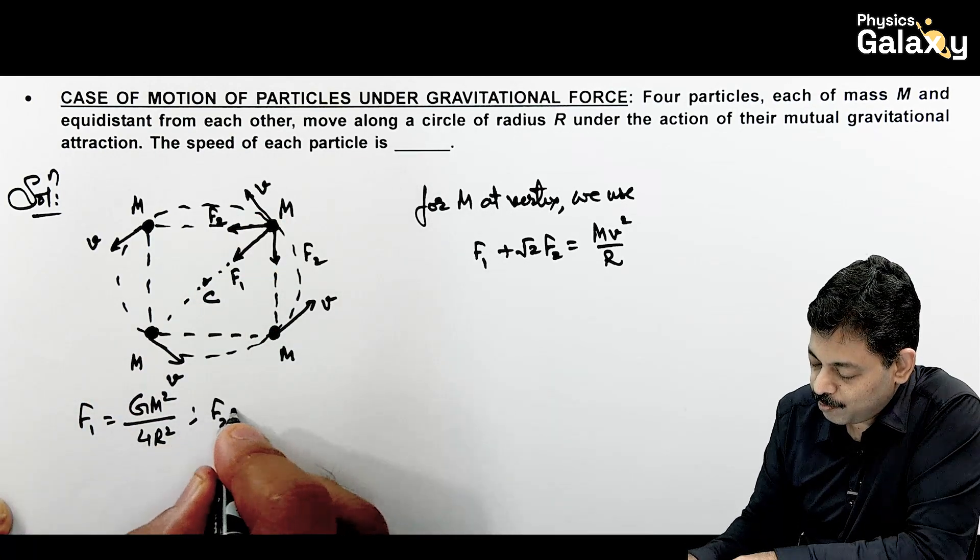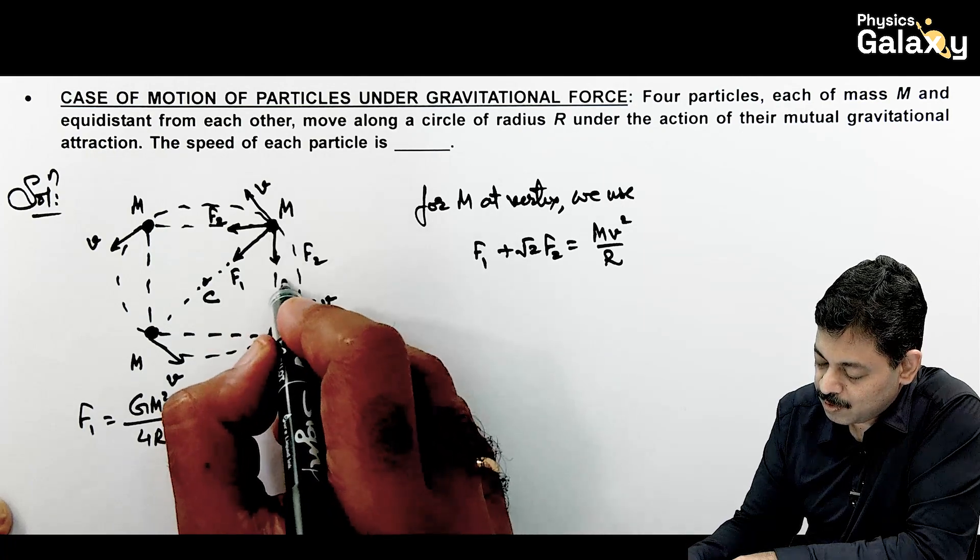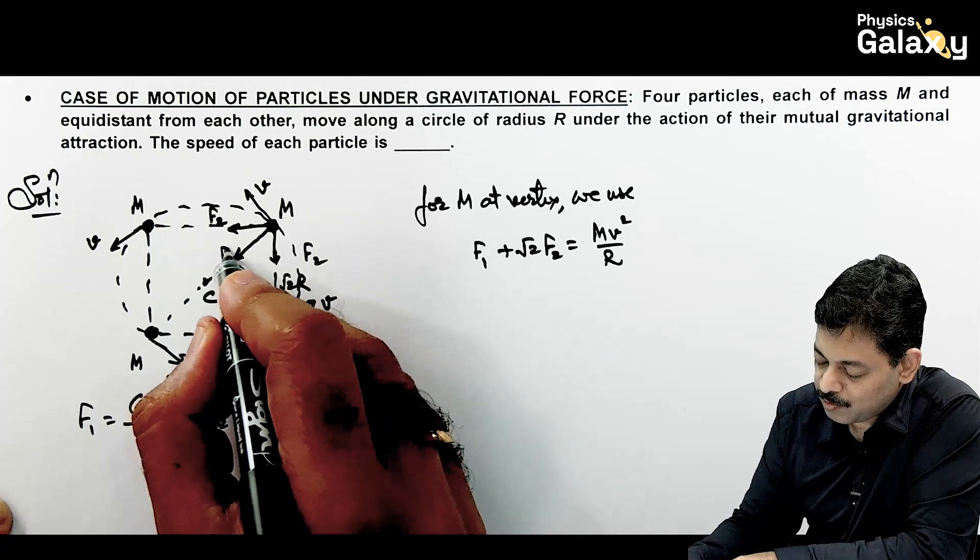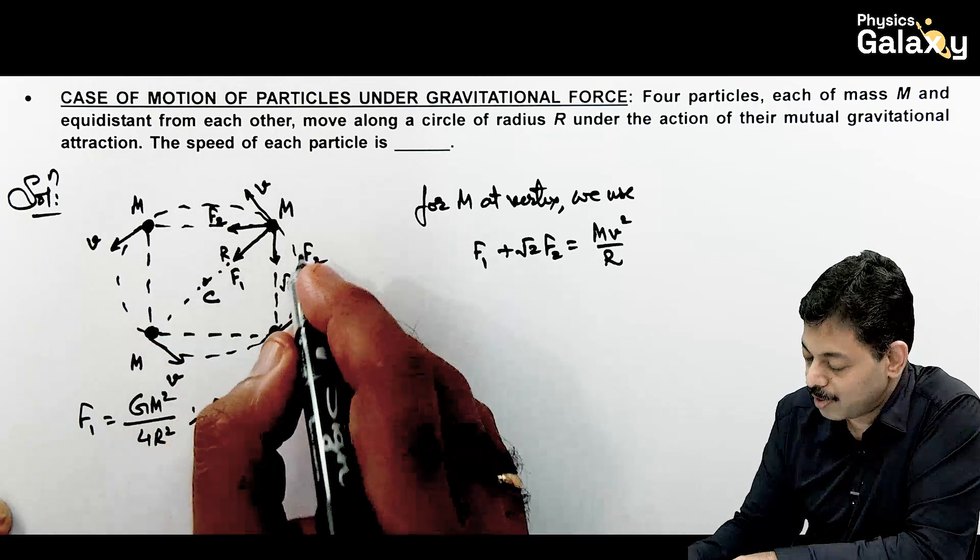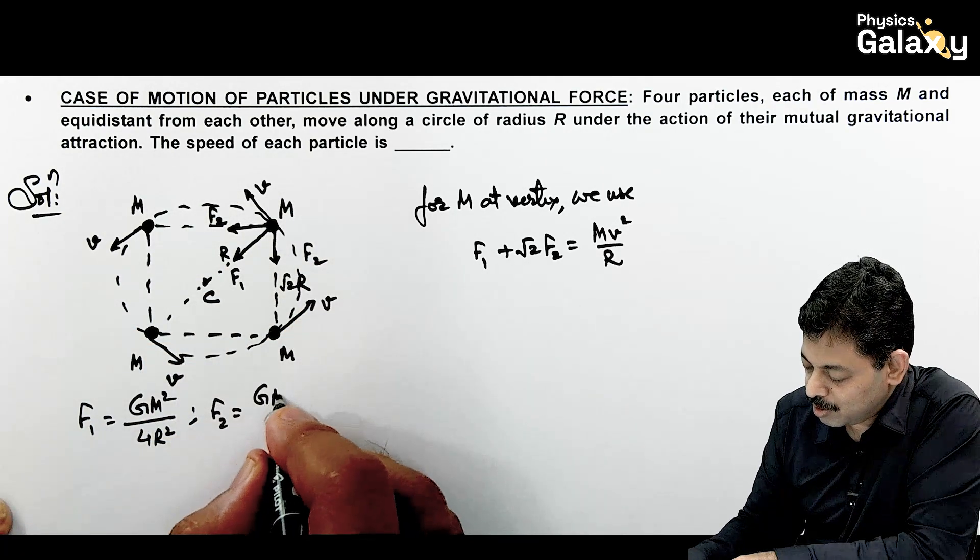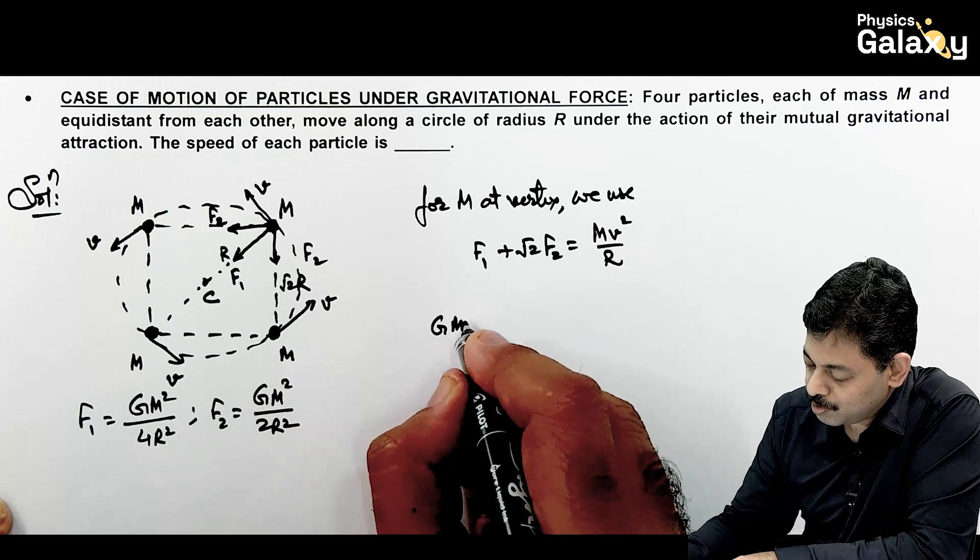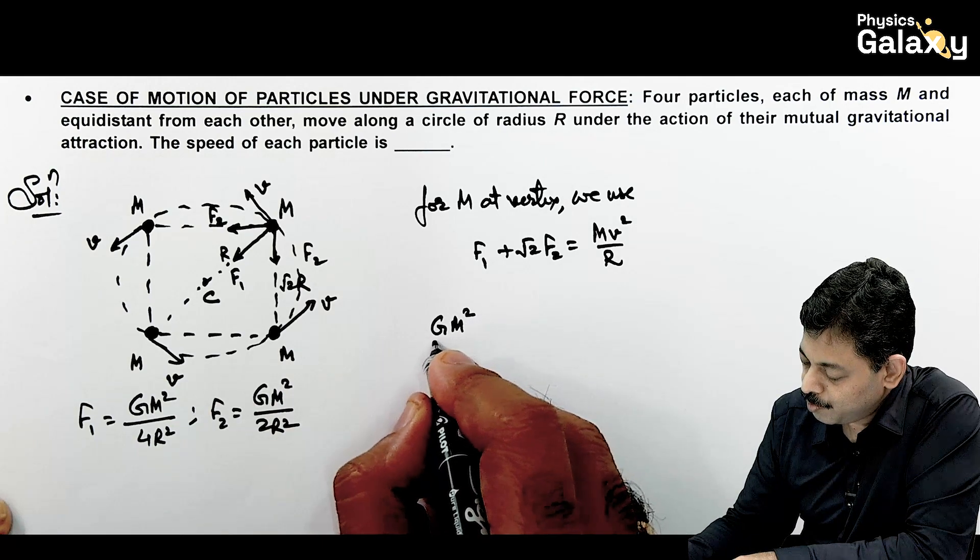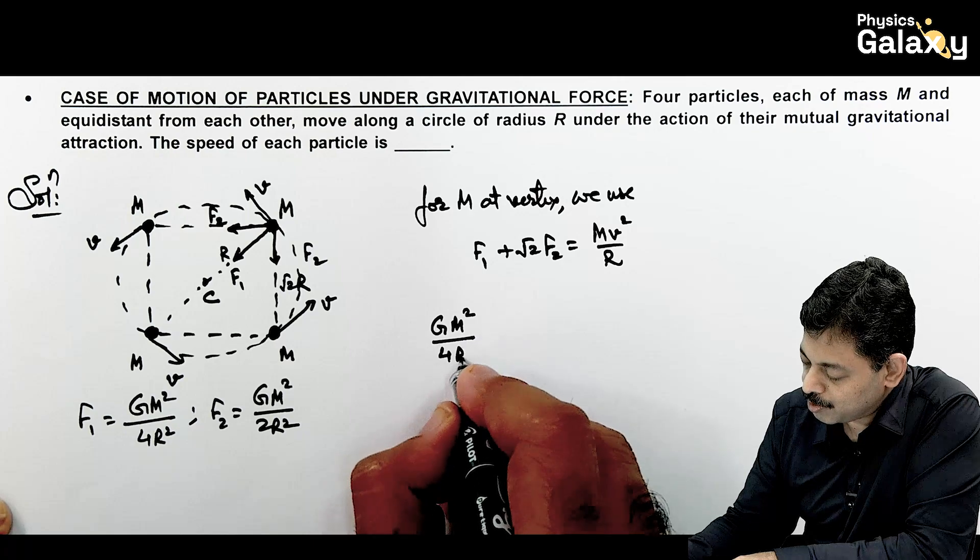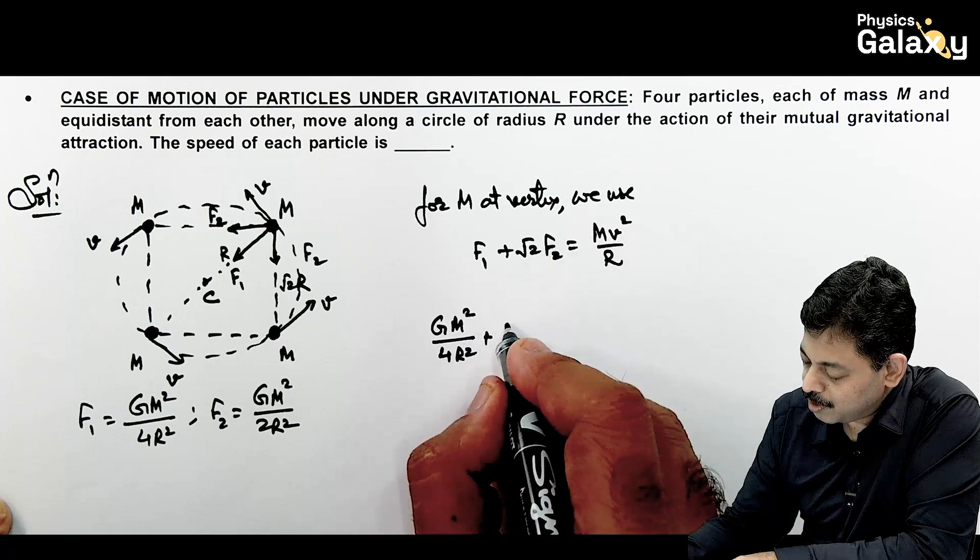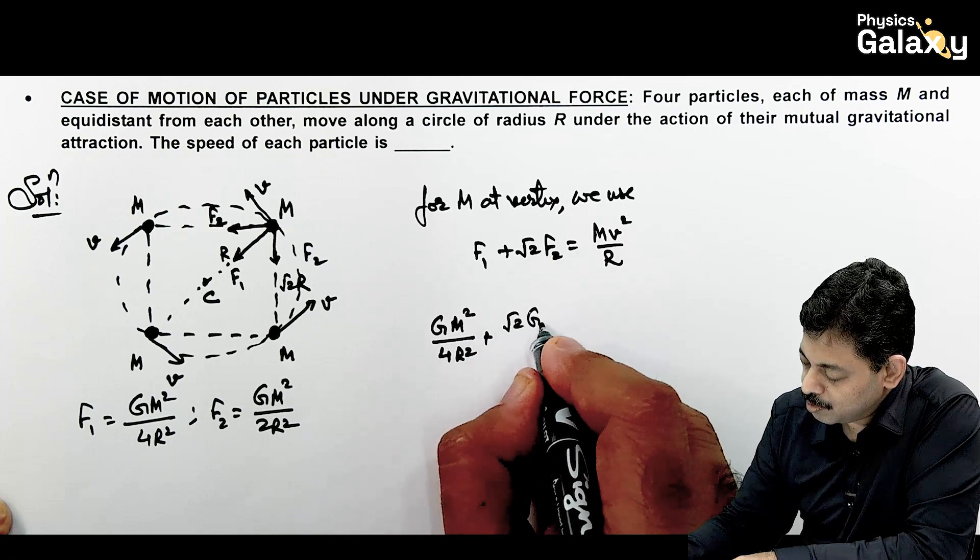So f1 value, it is due to this mass. So that can be written as Gm squared by 2R whole squared, which is 4R squared. And f2, if we see, then it is due to the mass m and this distance will be root 2 R, because it is revolving in a circle of radius R. So f2 can be written as Gm squared divided by 2R squared.